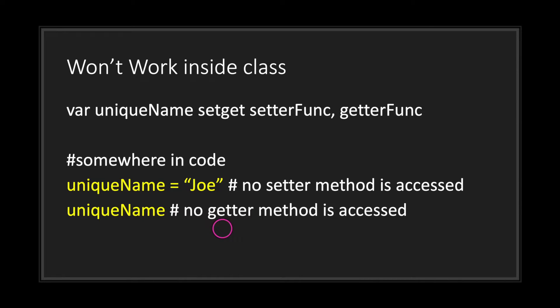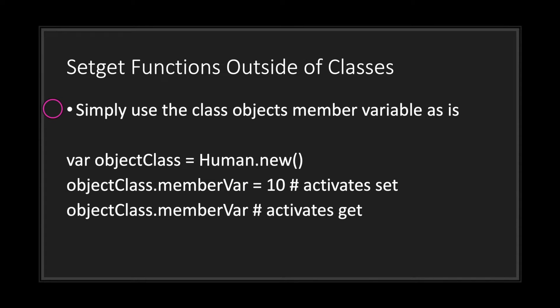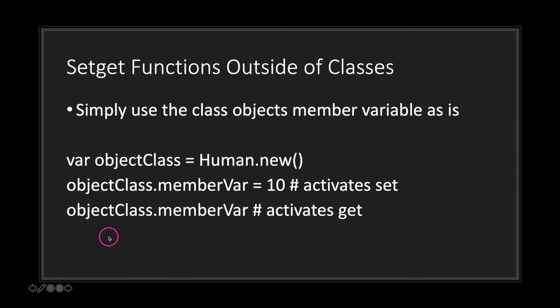To access your setters and getters outside of your class — basically from a class object — all you have to do is call your class object followed by dot notation followed by the name of your member variable, and automatically the compiler will access the setter and getter methods for you. Use the assignment operator with a value to activate the setter method, or reference the class member without assigning a value to activate the getter method.